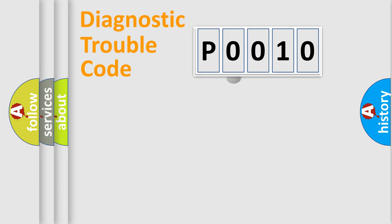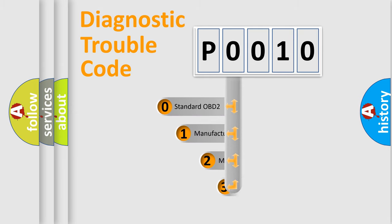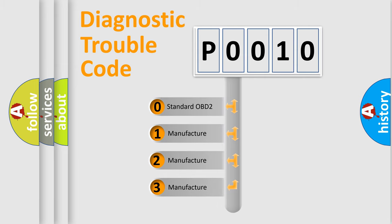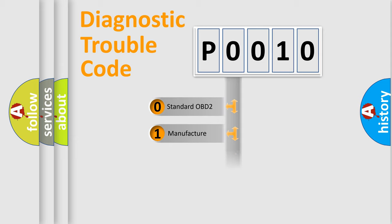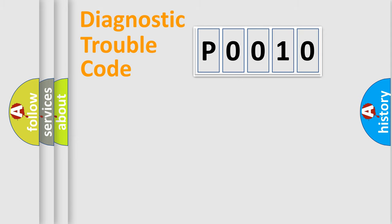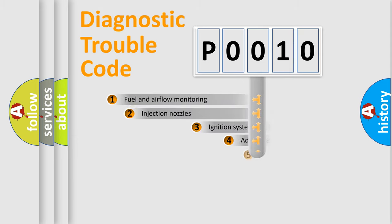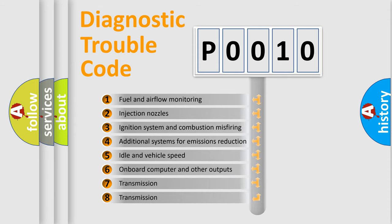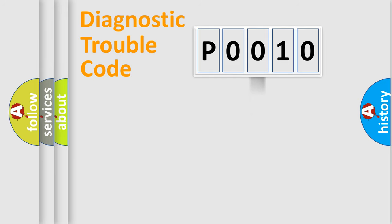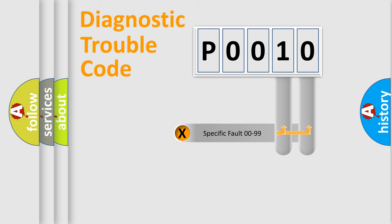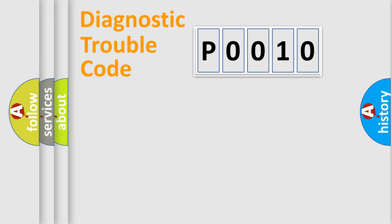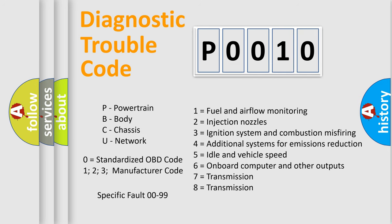This distribution is defined in the first character of the code. If the second character is expressed as zero, it is a standardized error. In the case of numbers 1, 2, or 3, it is a more specific expression of a car-specific error. The third character specifies a subset of errors, and this distribution is valid only for the standardized DTC code. Only the last two characters define the specific fault of the group.